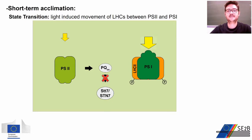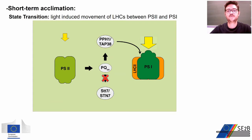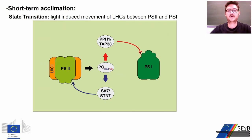When the light intensity is reduced and the excitation of PS2 is decreased, the plastoquinone pool is oxidized, with the deactivation of kinase activity. In the meanwhile, a specific phosphatase is activated, and this removes the phosphate group from LHC2, with the return of those complexes to the PS2 reaction center. So in general, this is one of the strategies that plants use to balance the excitation between PS2 and PS1.